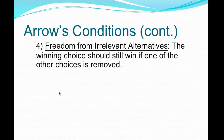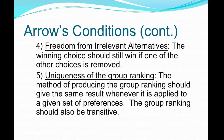Number four is freedom from irrelevant alternatives: the winning choice should still win if one of the other choices is removed. Sometimes in our preference systems, if we take something out, that would change who would win even if it wasn't the winner before. Number five is uniqueness of the group ranking: the method of producing the group ranking should give the same result whenever it is applied to a given set of preferences.